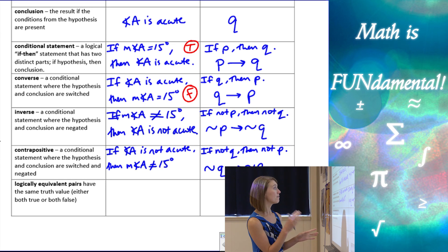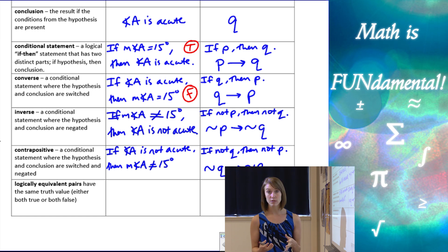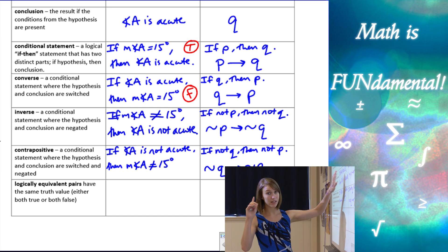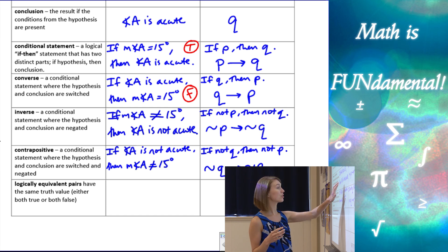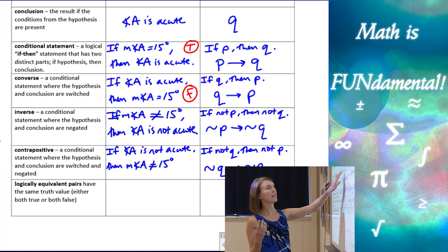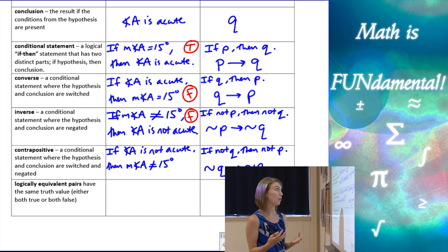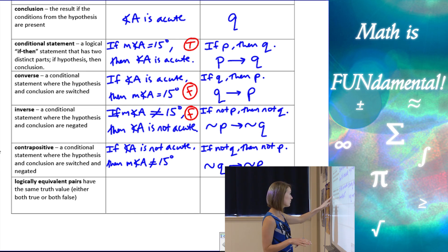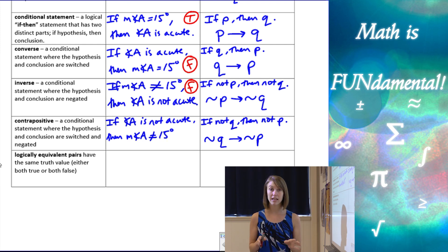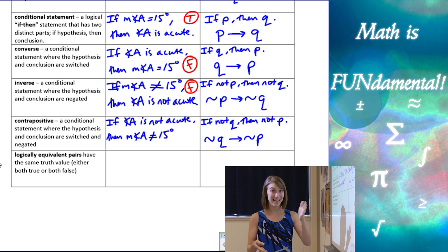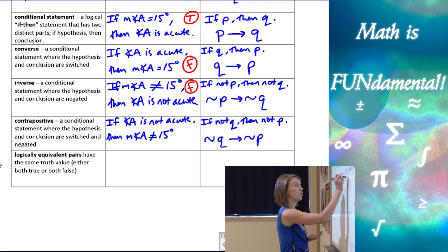The inverse — if the measure of angle A is not 15, then angle A is not acute — is also false. If angle A is, say, 30 degrees, it's not 15, but it is still acute. So just because angle A is not 15 doesn't mean it's not acute — that's our counterexample. The contrapositive — if angle A is not acute, then the measure of angle A can't be 15 — is true. If angle A is not acute, it can't be between 0 and 90, so it can't be 15.